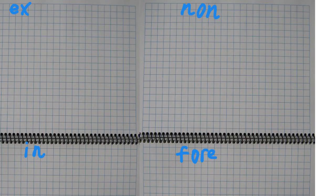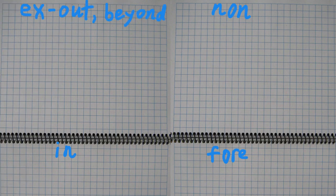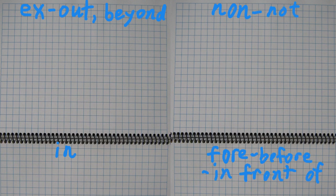Alright, let's start by defining each of these. So ex means out or beyond, non is simply not, fore could mean before or in front of, and then in has a couple of different meanings. It could be not, or it could also be in or into. Now that we've got these, let's look a little bit at each one and a few of the words you may not know.